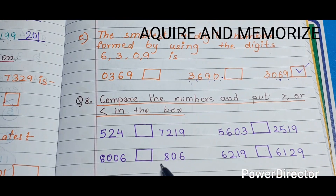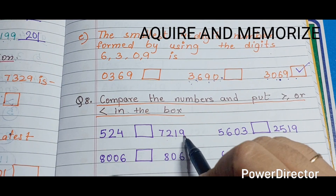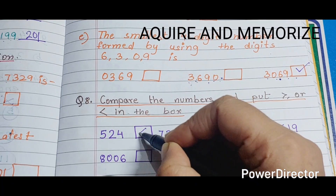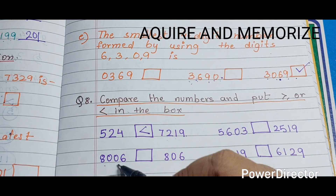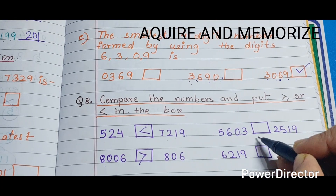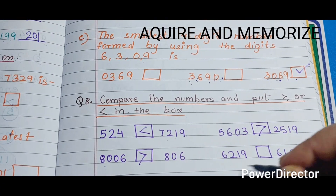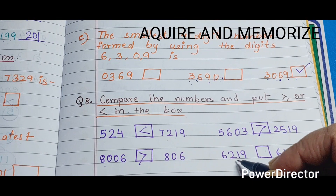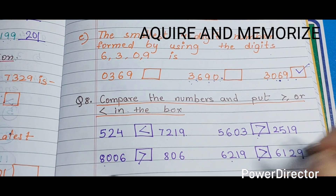Comparing: 524 and 7219 — 7219 is greater. 8006 and 806 — 8006 is greater. 5603 and 2519 — 5000 is more, so 5603 is greater. 6219 and 6129 — looking at the hundreds place, 6219 has 2 and 6129 has 1, so 6219 is greater.